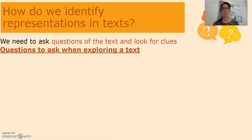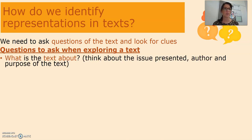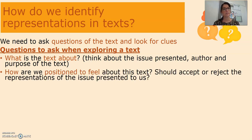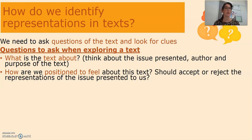So how exactly do we identify representations in text? We need to ask questions of the text and look for clues. When exploring a text, think about: what is the text about and what is the issue being presented? Who is the author and what is their purpose? How are we positioned to feel about this text? Authors use language and text structures to position us to feel a certain way — for example, in Rabbit Proof Fence we're positioned to empathise with the Indigenous girls.